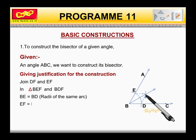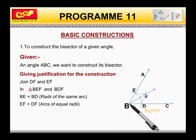EF is equal to DF, arcs of equal radii. BF is equal to BF, that is common. Therefore,